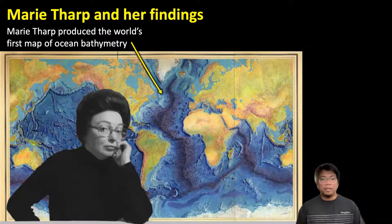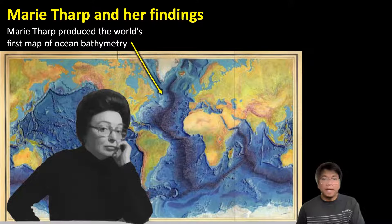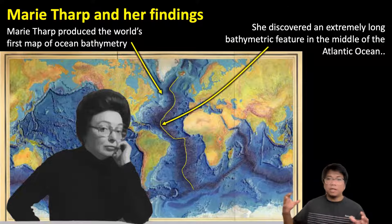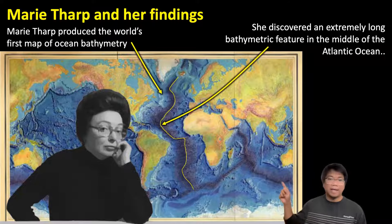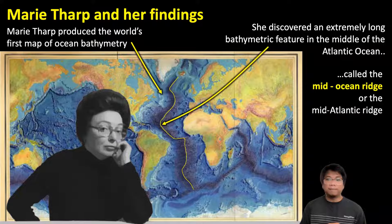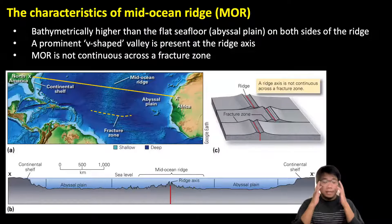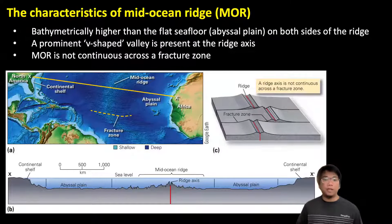Marie Tharp was the one who produced the world's first map of ocean bathymetry. One of her most important discoveries is this extremely long bathymetric feature located right in the middle of the Atlantic Ocean, highlighted in yellow there. It is called the Mid-Ocean Ridge — or, because it is right in the middle of the Atlantic Ocean, some people call it the Mid-Atlantic Ridge.